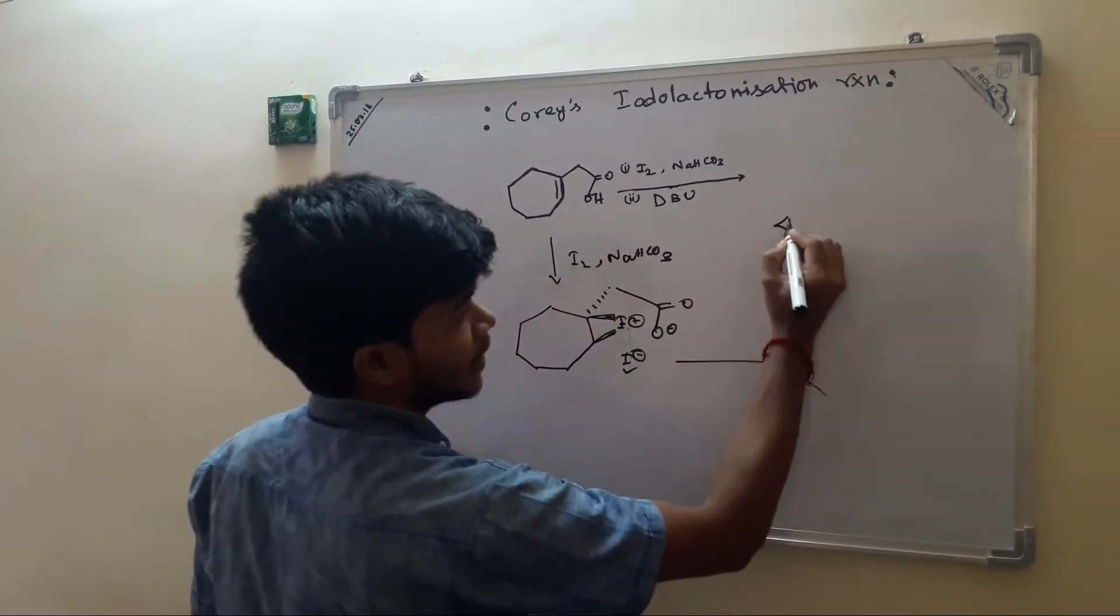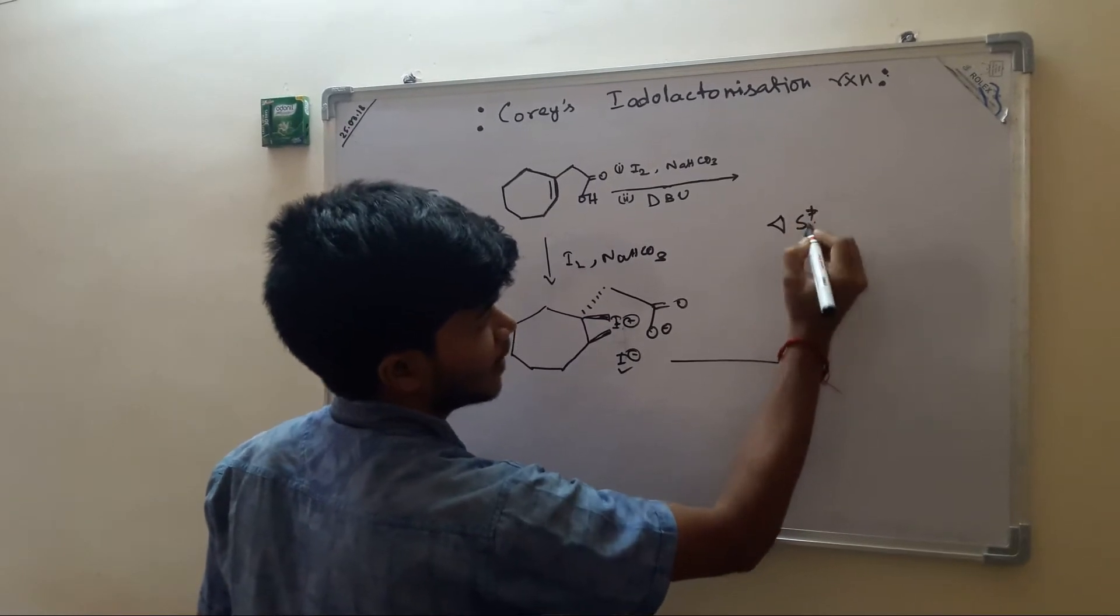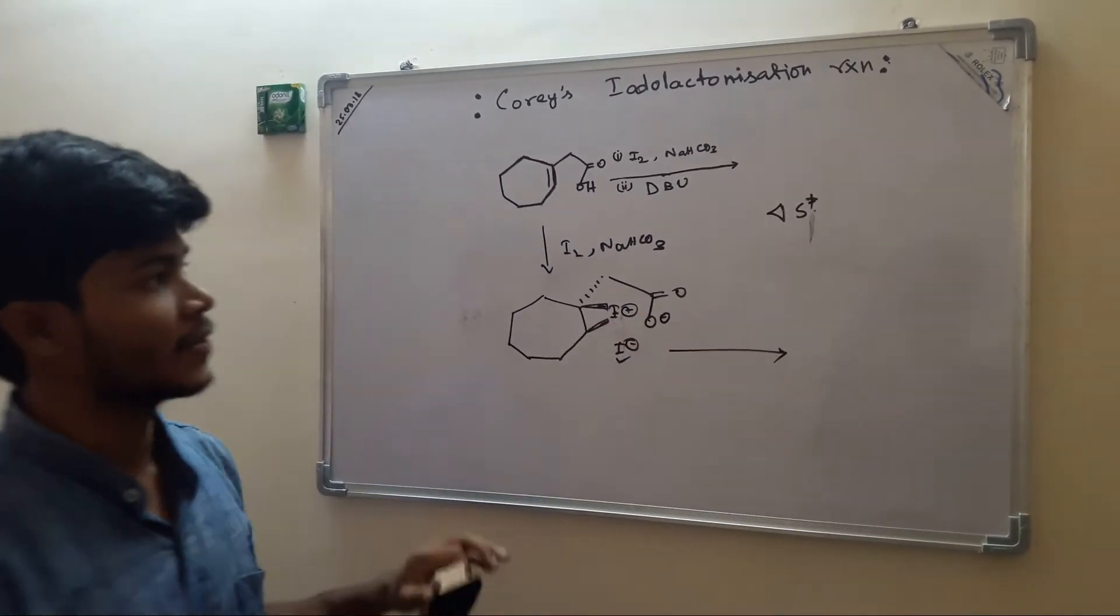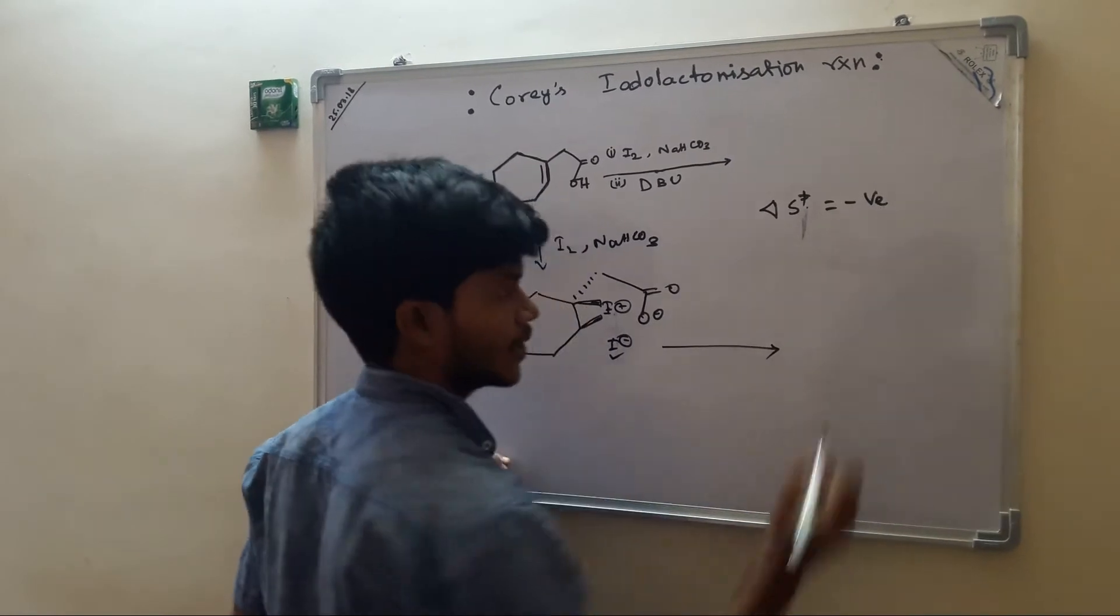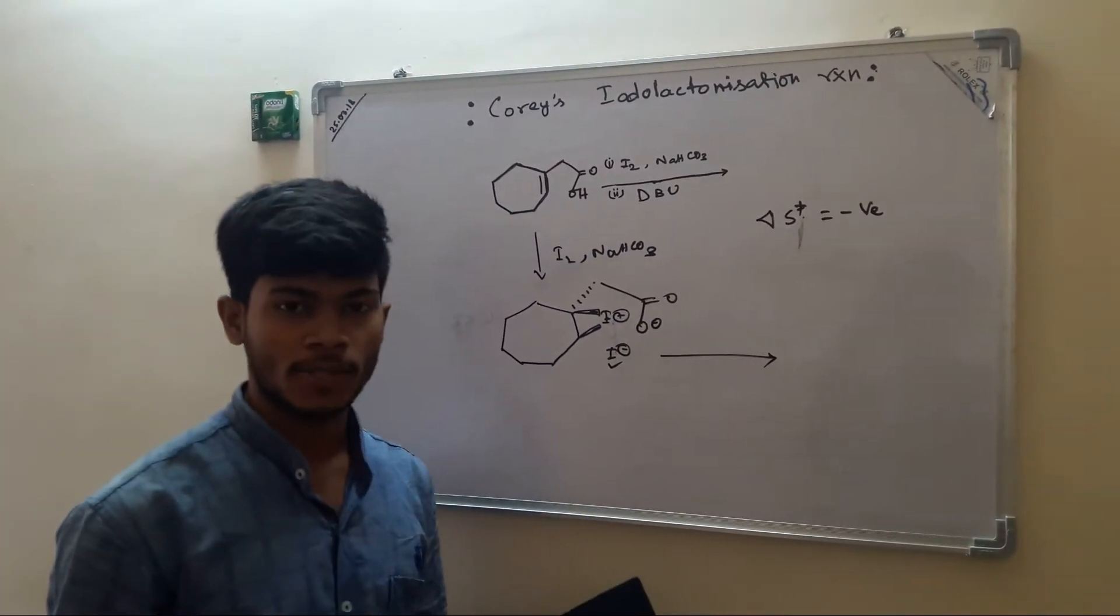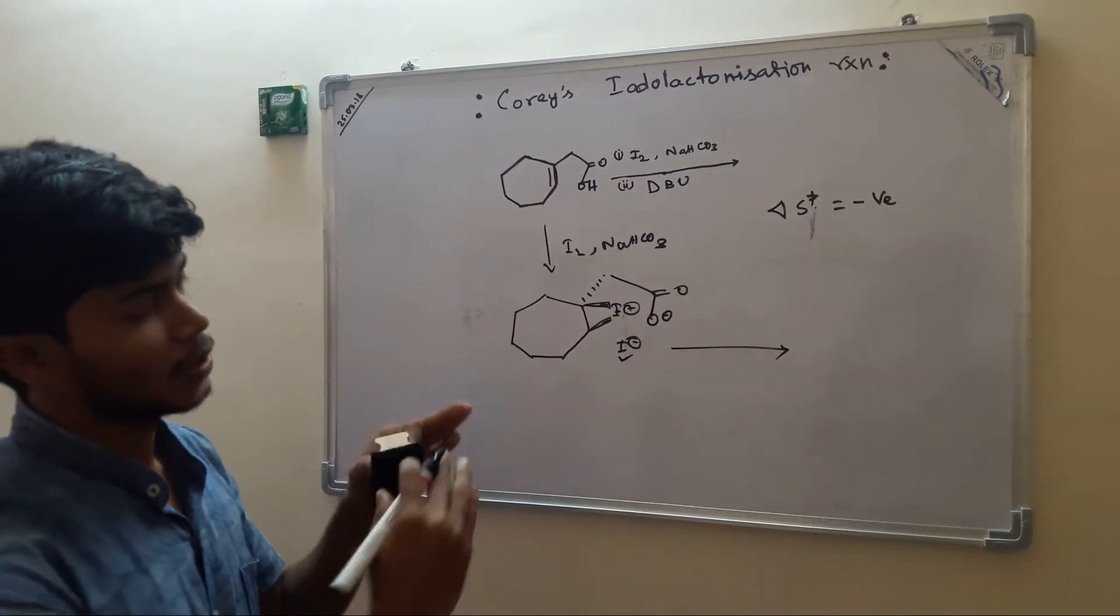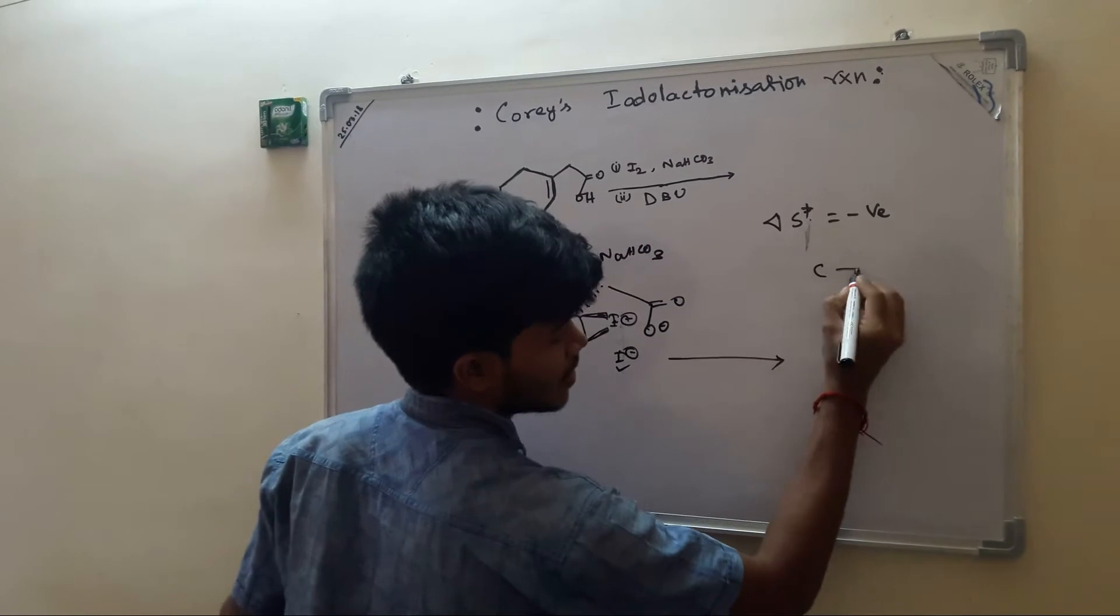But also we know that for a reaction, Delta S double dagger, that is the entropy of activation, is negative. Because the molecules are in random orientation in solution. To react, they have to come in specific orientation to react.